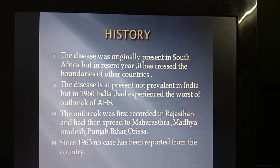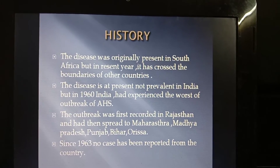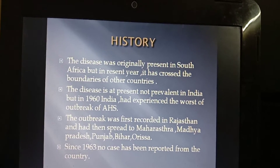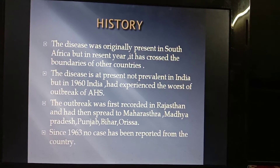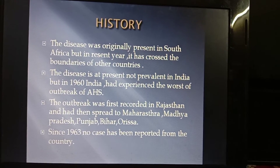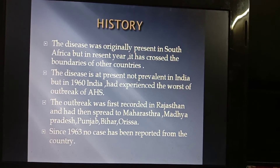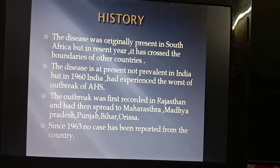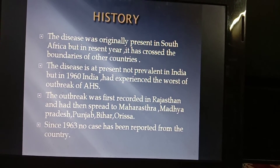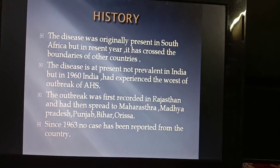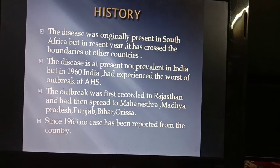History of the virus: the disease was originally present in South Africa, but in recent years it has crossed the boundaries of other countries. The disease is at present not prevalent in India, but in 1960 India experienced the worst outbreak of African Horse Sickness. The outbreak was first recorded in Rajasthan, then spread to Maharashtra, MP, Punjab, Bihar, and Orissa. Since 1963, no case has been reported from the country.